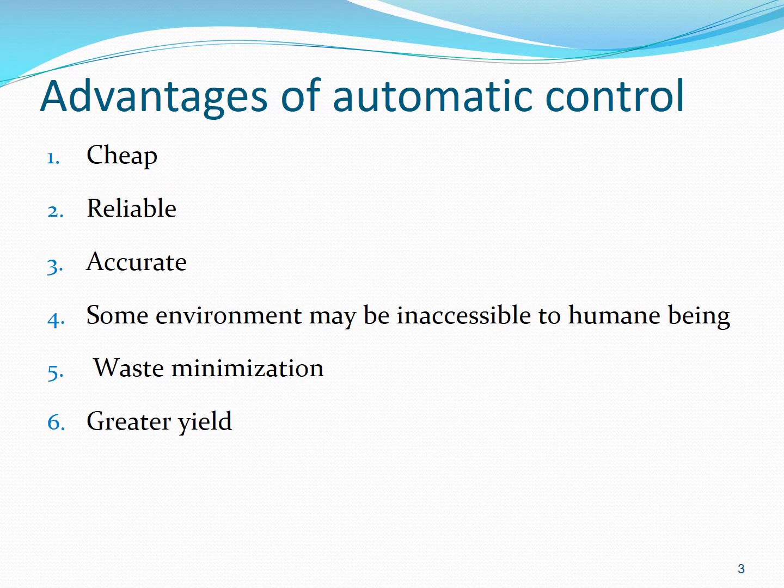One advantage of automatic control is that it is less costly. This is because in an automatic control, you deploy some electronic or mechanical circuitry, so you do not have to pay for the additional labor cost. Therefore, automatic control is less costly. The second advantage is reliability. Human beings can get tired, they have other needs, and human error is also there. All these factors are not present to that extent in automatic control. Therefore, automatic control is more reliable.